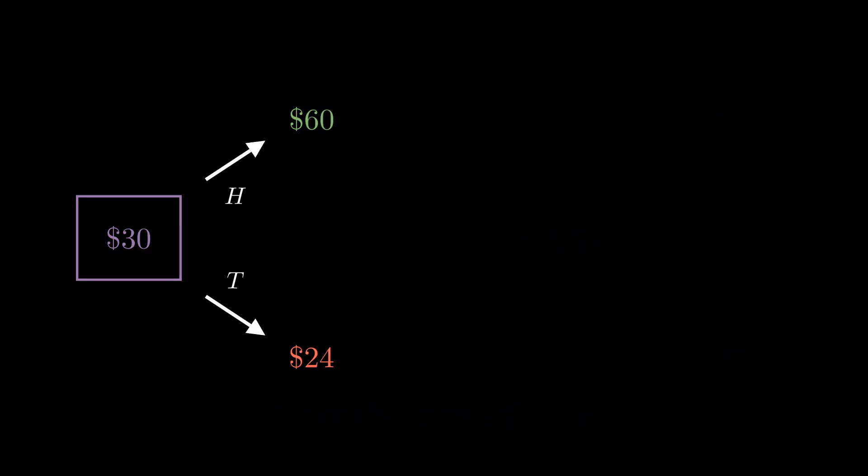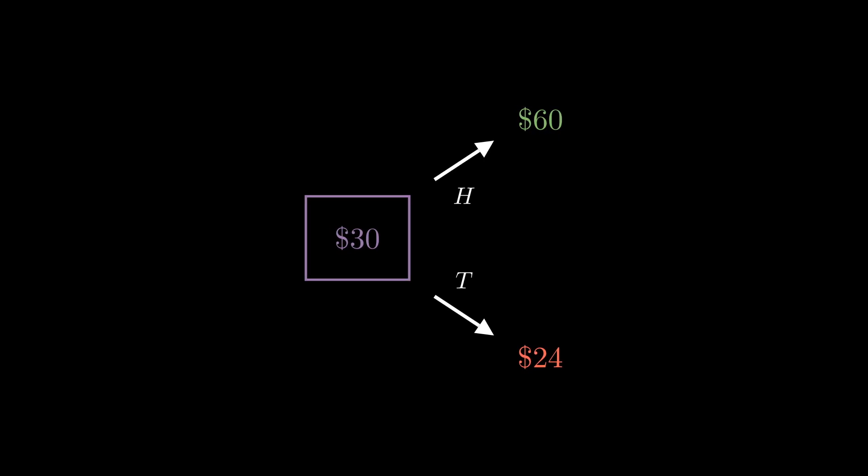So what does this mean? That means for any other asset in this market, as long as you give me the payouts, I have my risk-neutral probabilities and interest rate, I can tell you exactly what the price is to have no arbitrage. And that is the main idea of risk-neutral probabilities.